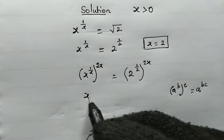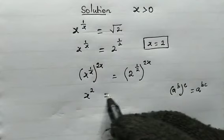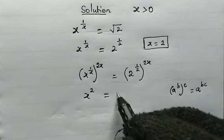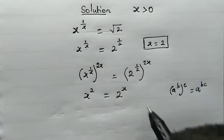x will cancel x and we have x to the power of 2. And this will be equal to 1 over 2 times 2x, we cancel 2, and we have 2 to the power of x.